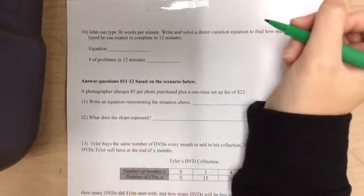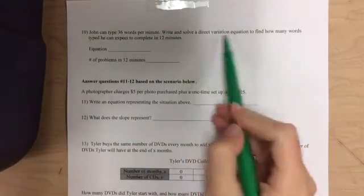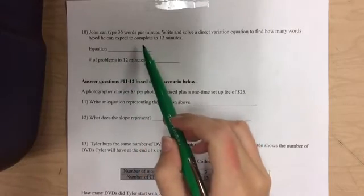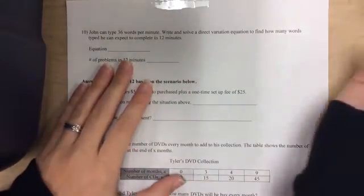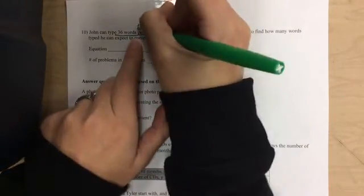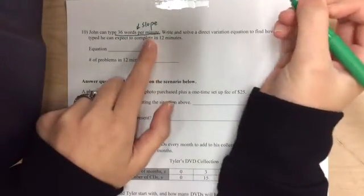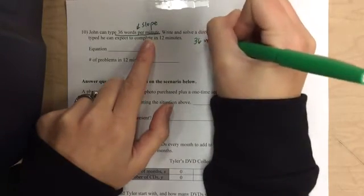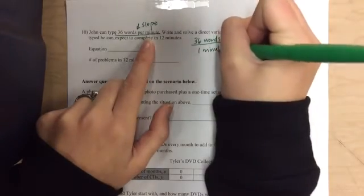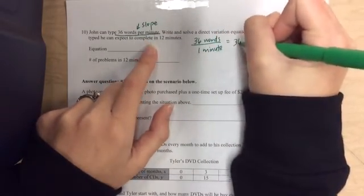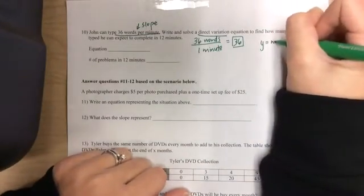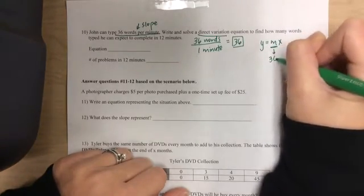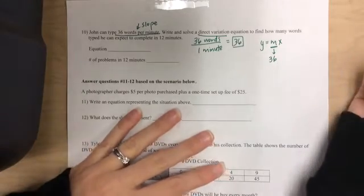We're moving right along on page 2. This is a word problem. It says that we need to write and solve a direct variation equation to find out how many words he types so we can expect to complete in 12 minutes. John can type 36 words per minute. We need to write an equation for that. Whenever I see a something per something, that makes me think of slope. So 36 words per minute is my slope. So it's 36 words for every one minute. So my slope is 36, because 36 over 1 is just 36. If it's a direct variation, there is no y-intercept. So my equation should just look like y equals mx. The only number that I have to replace is m. So we have y equals 36x. That's it for my equation.